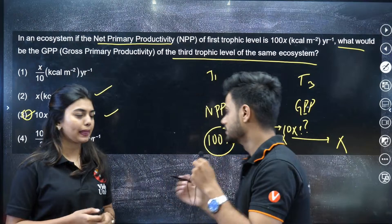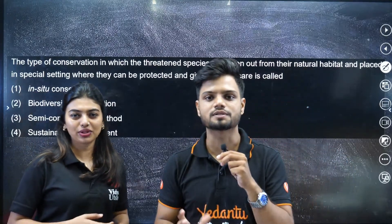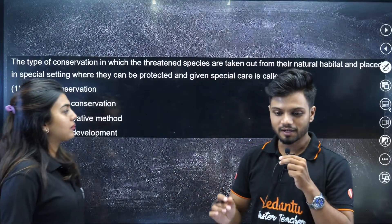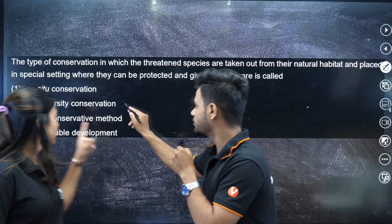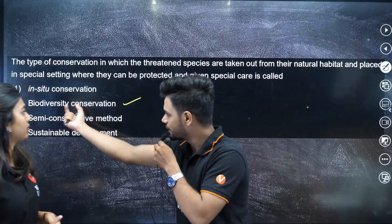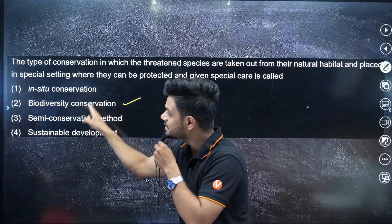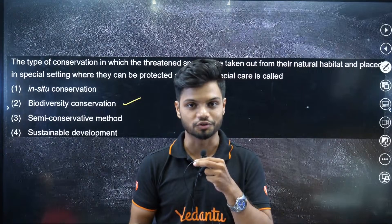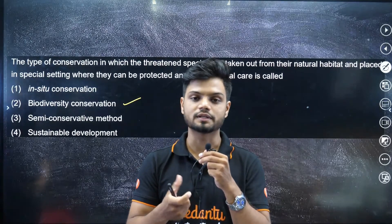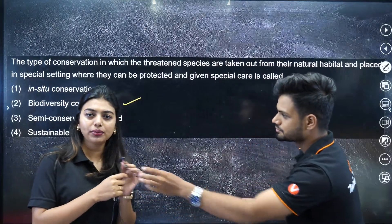There's one more botany question — if you just read the question itself, it clearly points to ex-situ conservation as the answer. But when you look at the options, ex-situ conservation is not listed there at all. The most probable answer is being said to be option two, but it is only 'probable' because biodiversity conservation includes conservation of soil and water, and in-situ conservation falls under it too. The correct answer is not given, so this can also be given as a bonus mark.